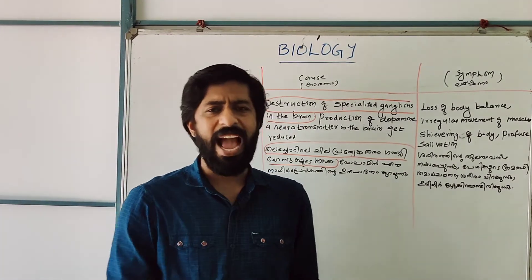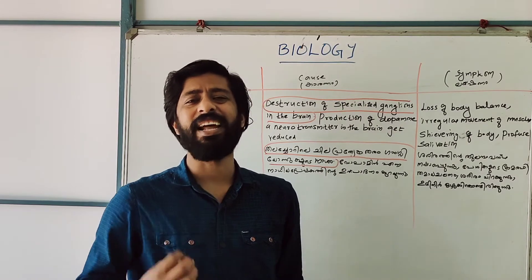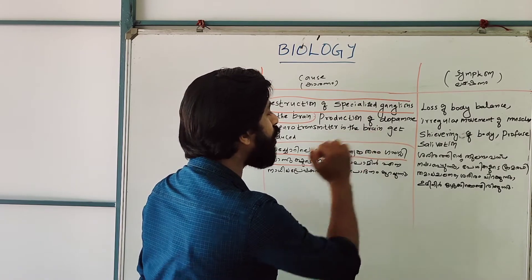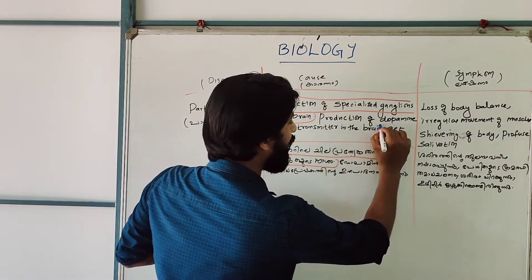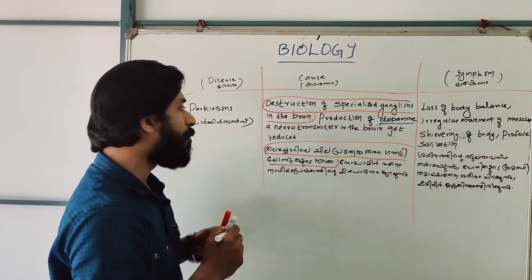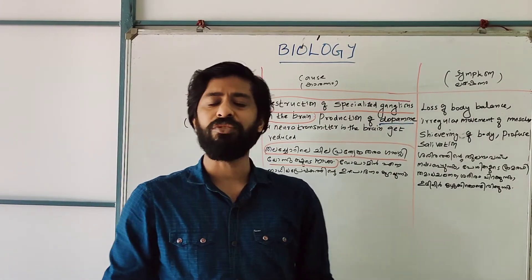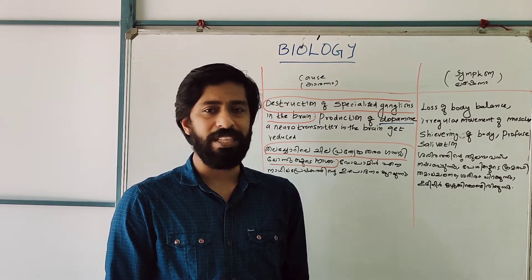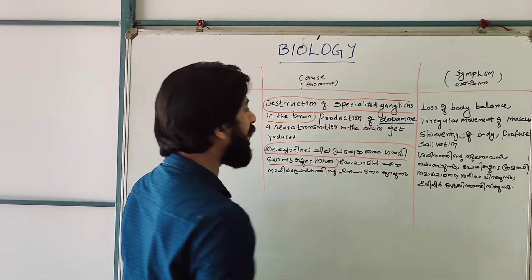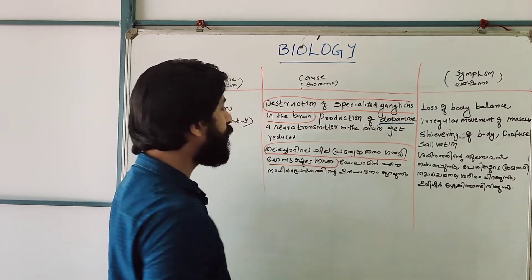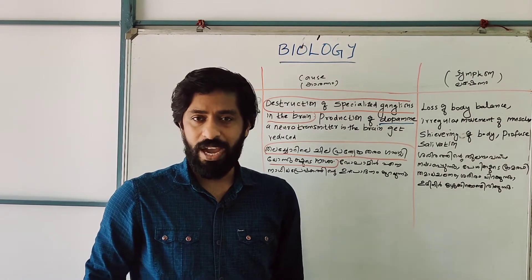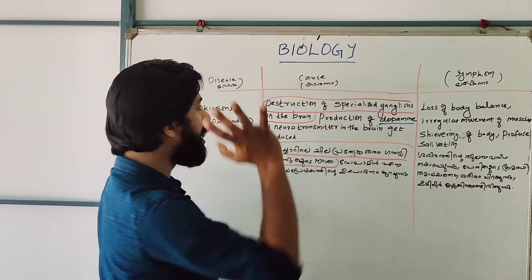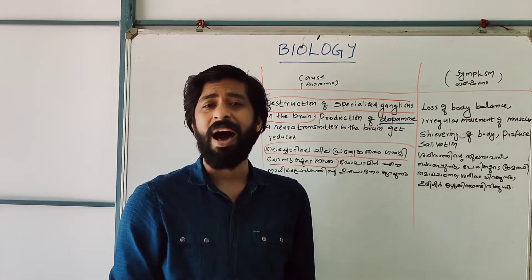What is the reason for the destruction of these ganglions? The production of dopamine is decreased. Because of the decreased production of dopamine, a neurotransmitter gets reduced. Dopamine reduction leads to loss of ganglions. This is the cause of Parkinson's disease.